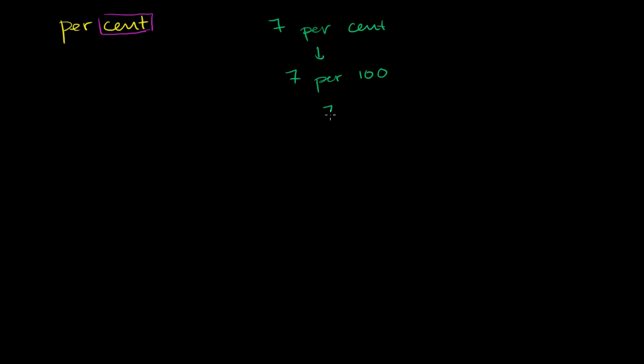This is the same thing as 7 per hundred, which is the same thing as a fraction as 7 per hundred. With that out of the way, let's see if we can write 0.601 as a percentage. We essentially want to write it as something over 100.